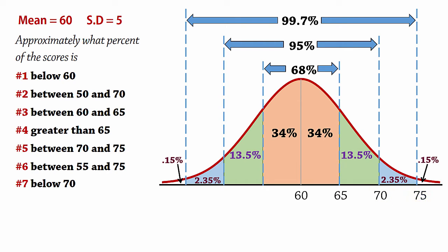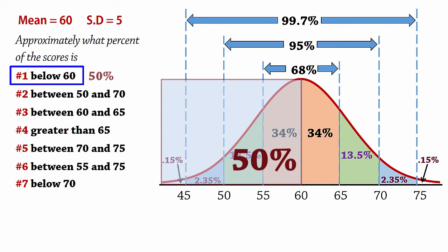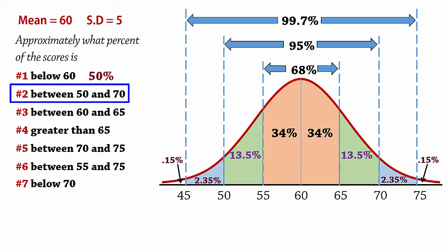On the negative side, we have 55 for one standard deviation below the mean, 50 for two, and 45 for three. For number 1, the percent below 60 is 50% because the distribution is symmetric about the mean. For number 2, 50 and 70 are within two standard deviations of the mean. Therefore, approximately 95% of the scores fall between them.